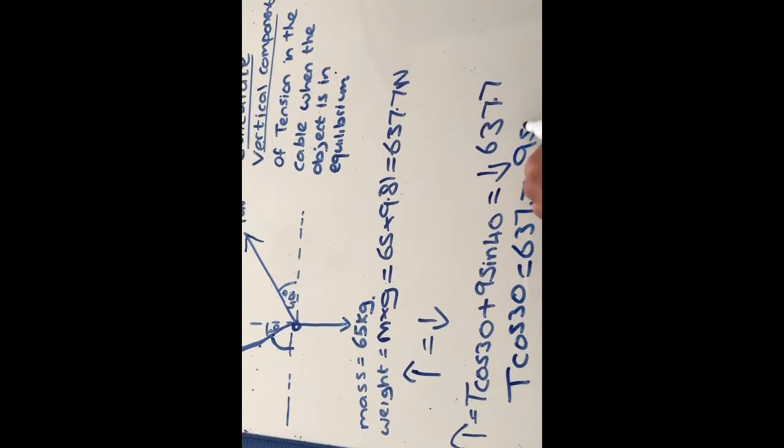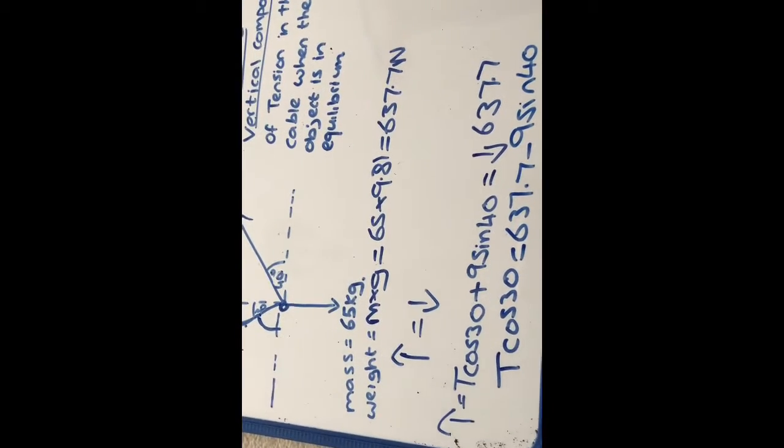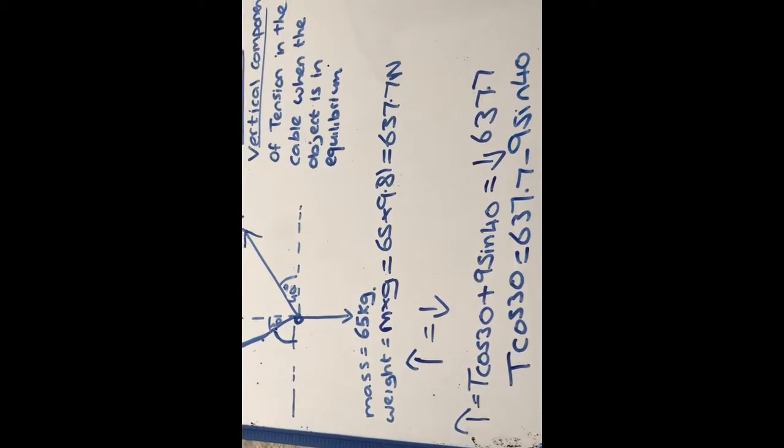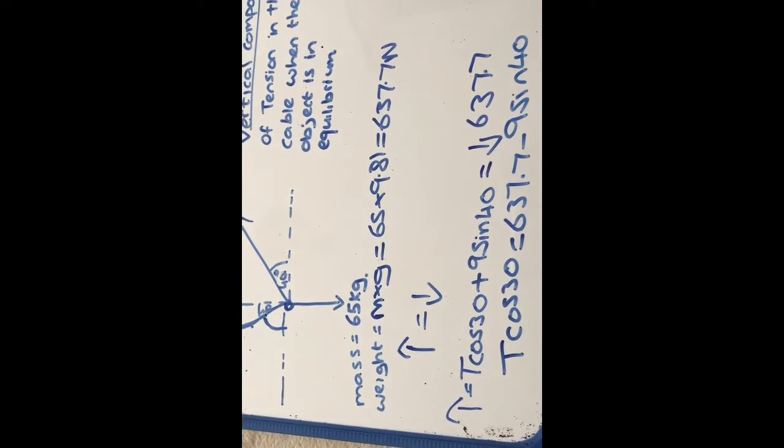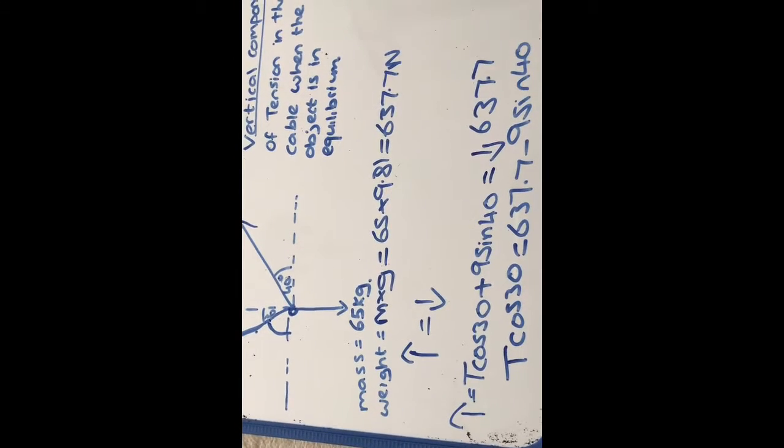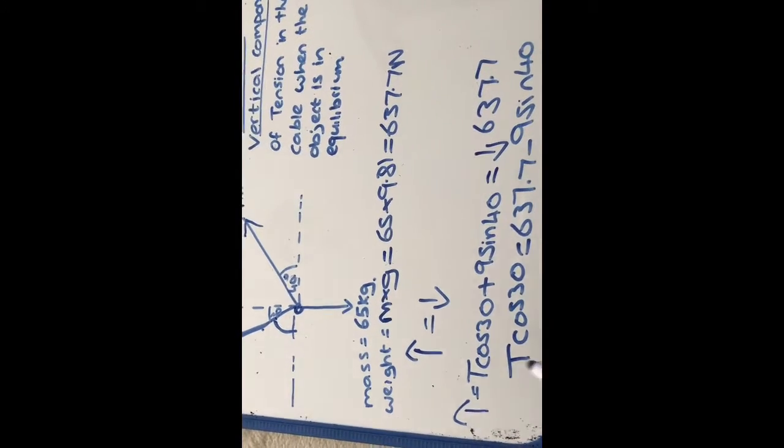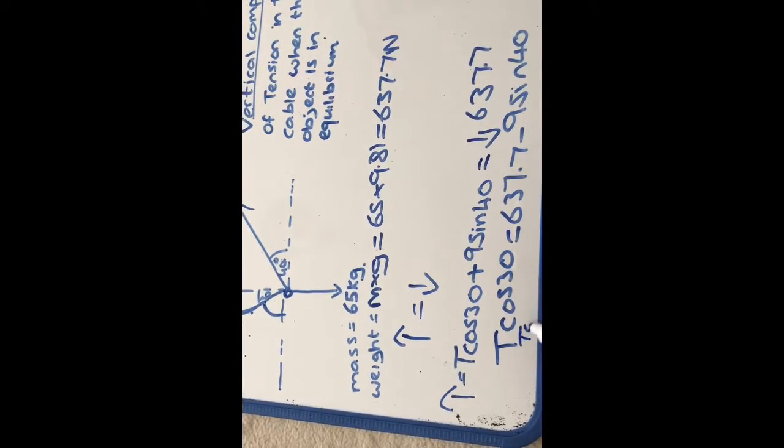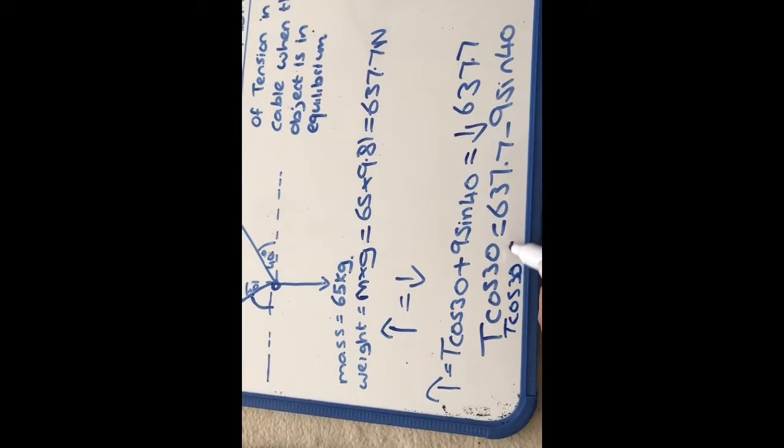We want to get that by itself, and that will tell us what our tension in the vertical component is. So let's do this now, and we get T cos 30 should be equal to 631.9 newtons.